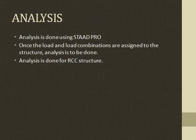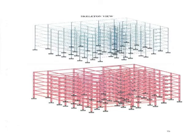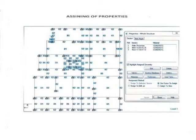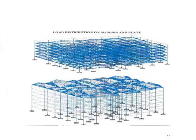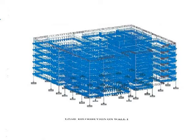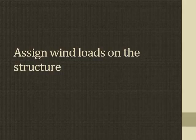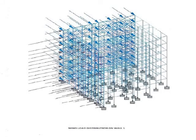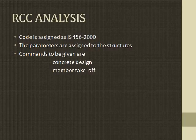Analysis is done using STAAD Pro. Once the loads and load combinations are assigned to the structure, analysis is performed for the RCC structure. This is the skeleton view. Properties of the structure are assigned, followed by load distribution on members and plates. Loads assigned on the walls are shown using diagrams. Wind loads are assigned to the structure — wind speed and direction are extremely essential for the construction of high-rise buildings. RCC analysis code is assigned as IS 456-2000, with parameters assigned and commands given for concrete design and member takeoff.